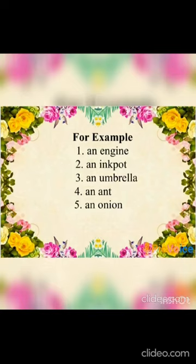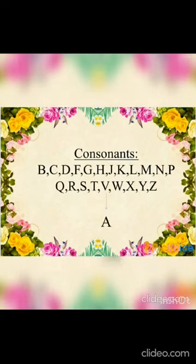Here we can see that engine, ink pot, umbrella, ant, onion — all these words are starting with a vowel. So to identify each word, we have used the article 'an'.